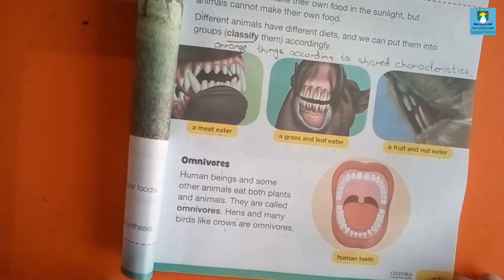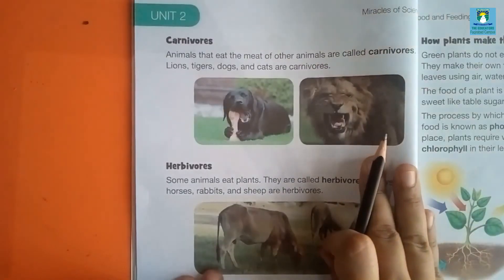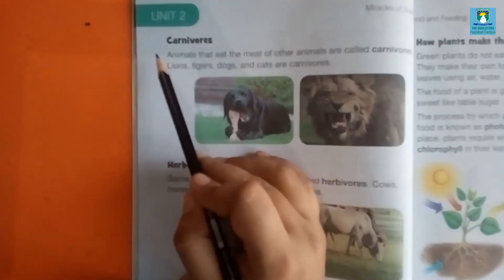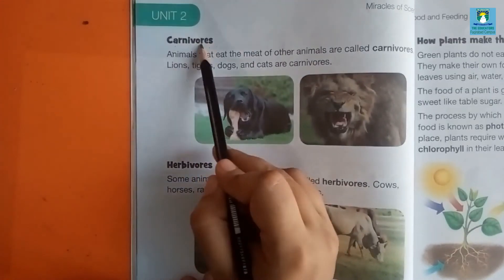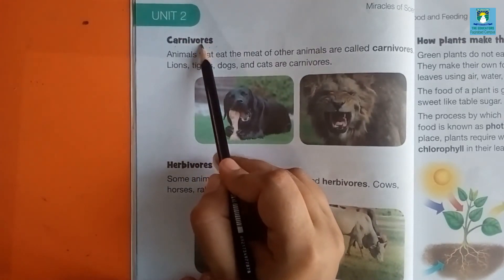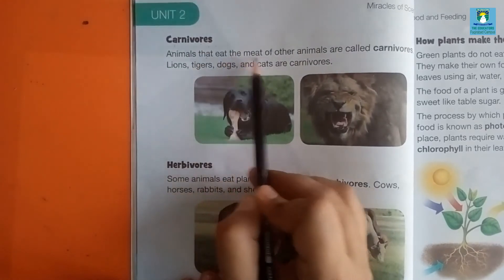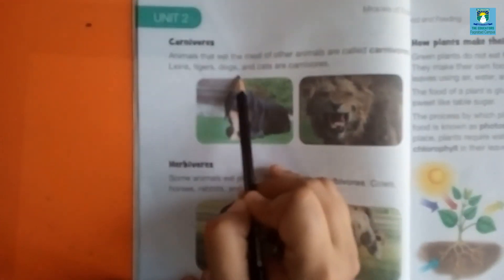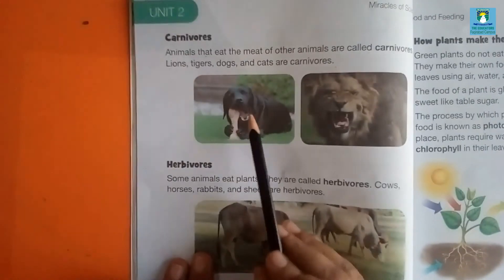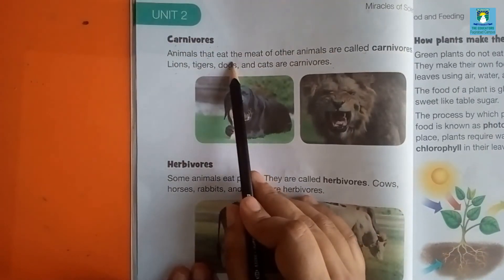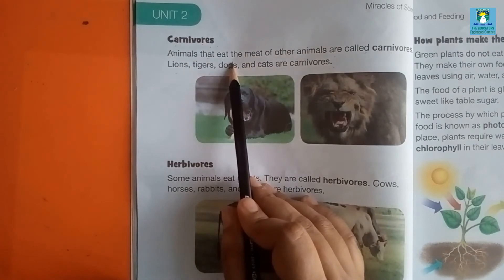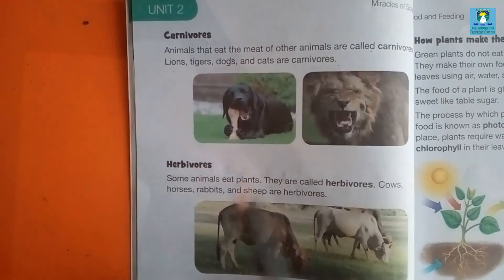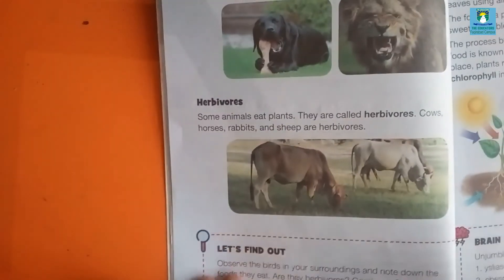Come to the next page, page number 14. The next topic is carnivores. Carnivores are animals that eat the meat of other animals. Lions, tigers, dogs, and cats are carnivores. Those animals which eat the flesh or meat of other animals are known as carnivores.